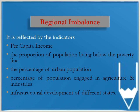the proportion of population living below the poverty line, the percentage of urban population, and the percentage of population engaged in agriculture and industrial sectors, infrastructure development of different states, etc. We can identify regional imbalance with the help of these indicators.